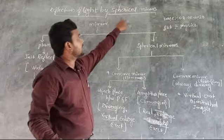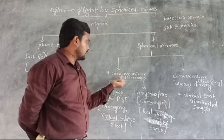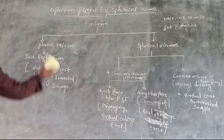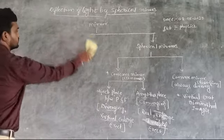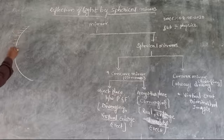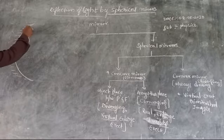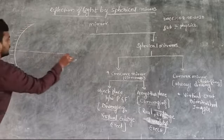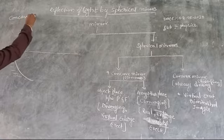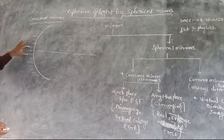So the spherical mirror — your topic — has two types: concave and convex. Concave is a converging mirror and convex is a diverging mirror. Now let us take the concave mirror. Any arc-underlined portion forms the mirror. We can find the midpoint of this arc.